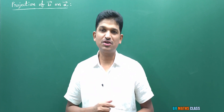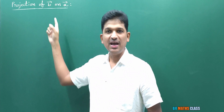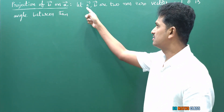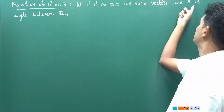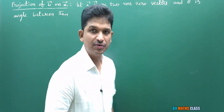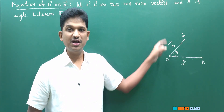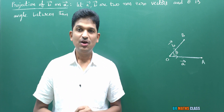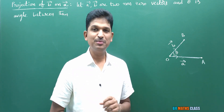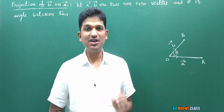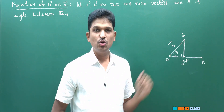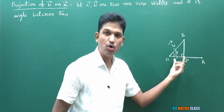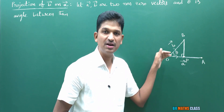To understand the geometrical meaning of dot product of these two vectors, please watch this video till the end. I'll write the definition of projection of B bar on A bar. I'll consider two non-zero vectors: let A bar and B bar be two non-zero vectors and theta is the angle between them. I'll draw the diagram — I take OA bar as A bar, OB bar as B bar, and theta is the angle between them. Then, what is the projection of B bar on A bar? In this diagram, I draw BP which is perpendicular to OA. Then OP is called the projection of B bar on A bar.